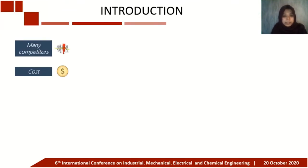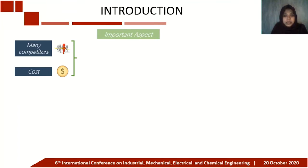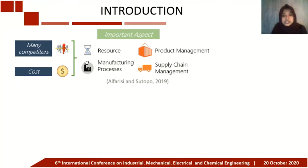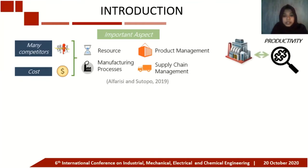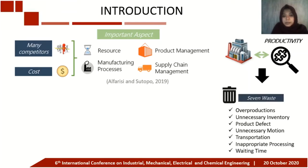In today's era, competition in the industrial world is getting fiercer and cost must be a concern for every industry. Several important aspects must be considered by companies to remain competitive: research, product management, manufacturing process, and supply chain management. Therefore, companies must increase productivity in all processes, and one way to do that is to eliminate waste.